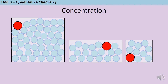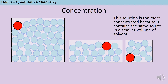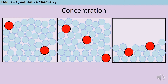What about these three solutions? Which one is the most concentrated? The solution on the right is the most concentrated. All three solutions contain the same amount of solute, but the third solution on the right hand side contains far less solvent. So the ratio between solute and solvent has decreased, which means that the right hand one is the most concentrated.